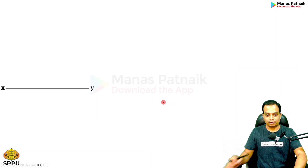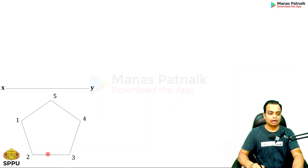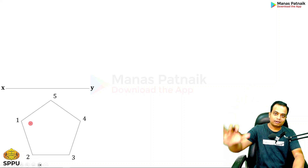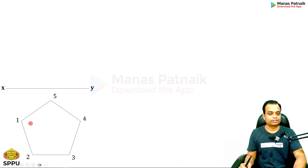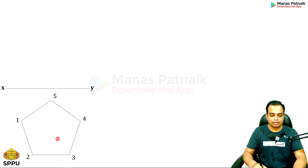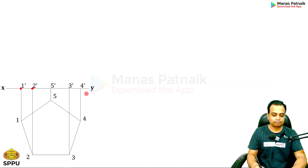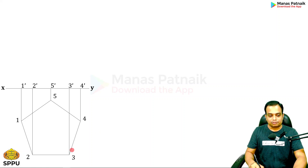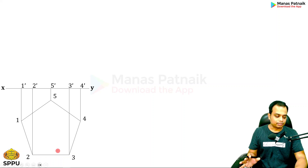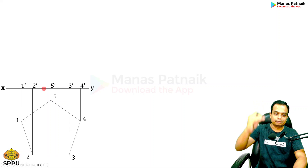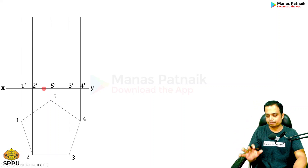Now let's create the top view. I've named the bottom five corners of the base as 1, 2, 3, 4, 5, and the top five corners are left as-is. For the front view, extend lines from all corners: 1-dash, 2-dash, 3-dash, 4-dash, and 5-dash. Since it's a regular pentagon, all sides are equal at 30 mm. The height of the prism is 60 mm.